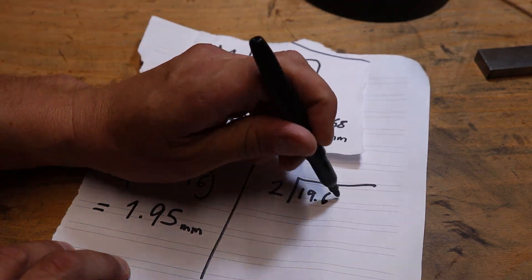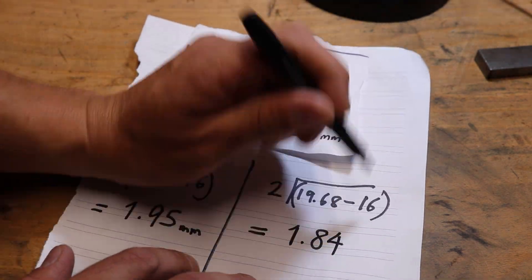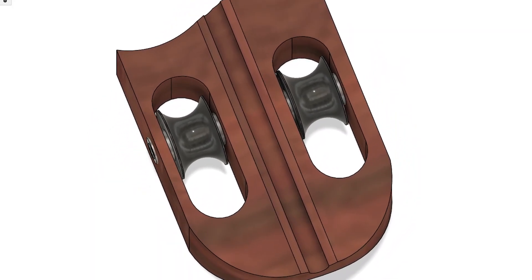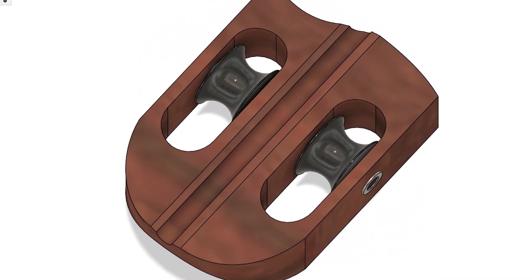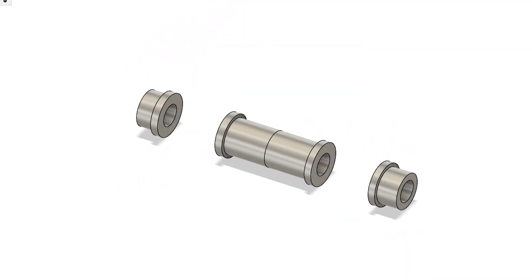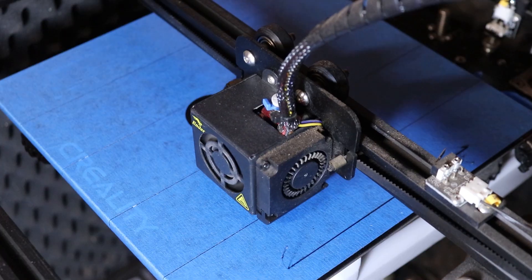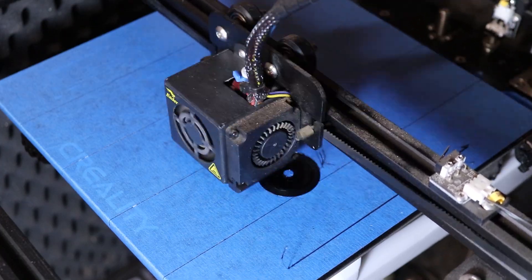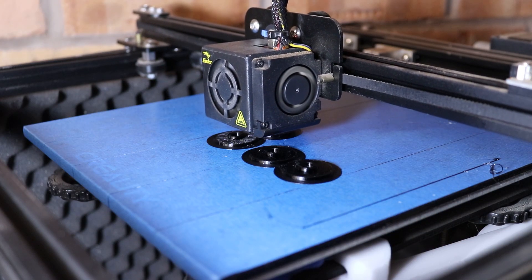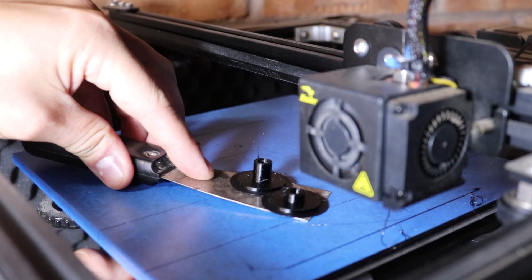So after a bit of measuring and some maths, I took to CAD software to design the spacers. So this is what I came up with. Overall I was pretty happy with the design, and confident it was going to work. Time to 3D print the components. The components were printed in PETG, and it took less than an hour to complete.